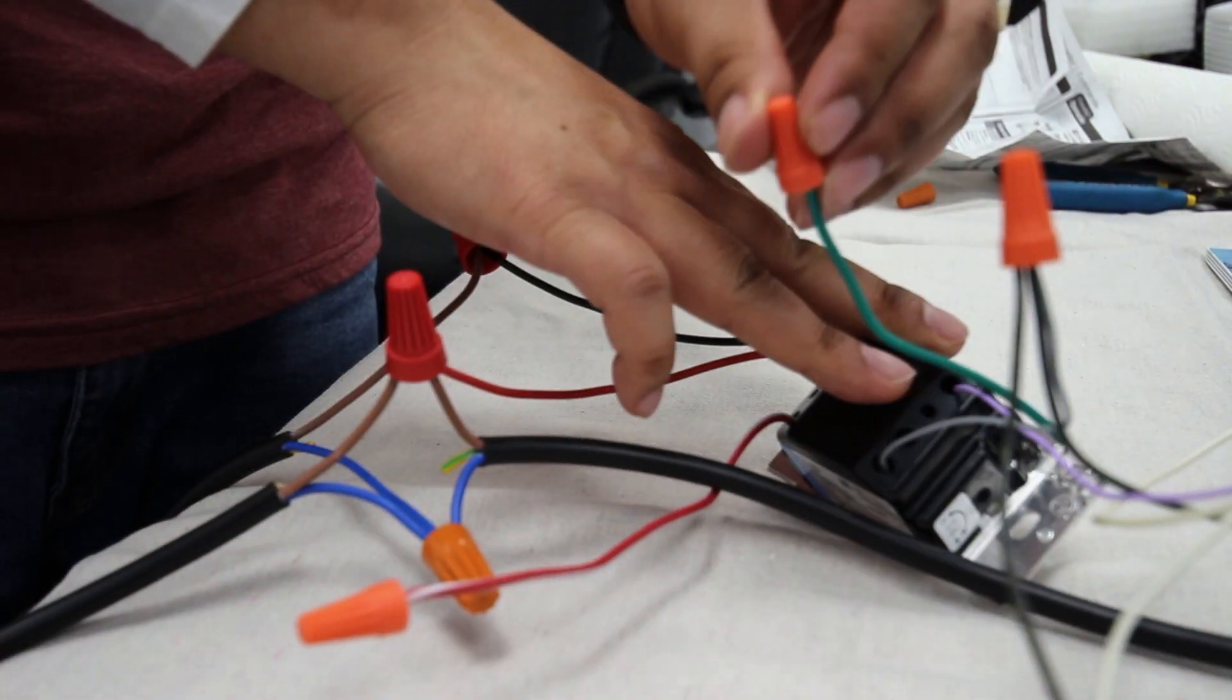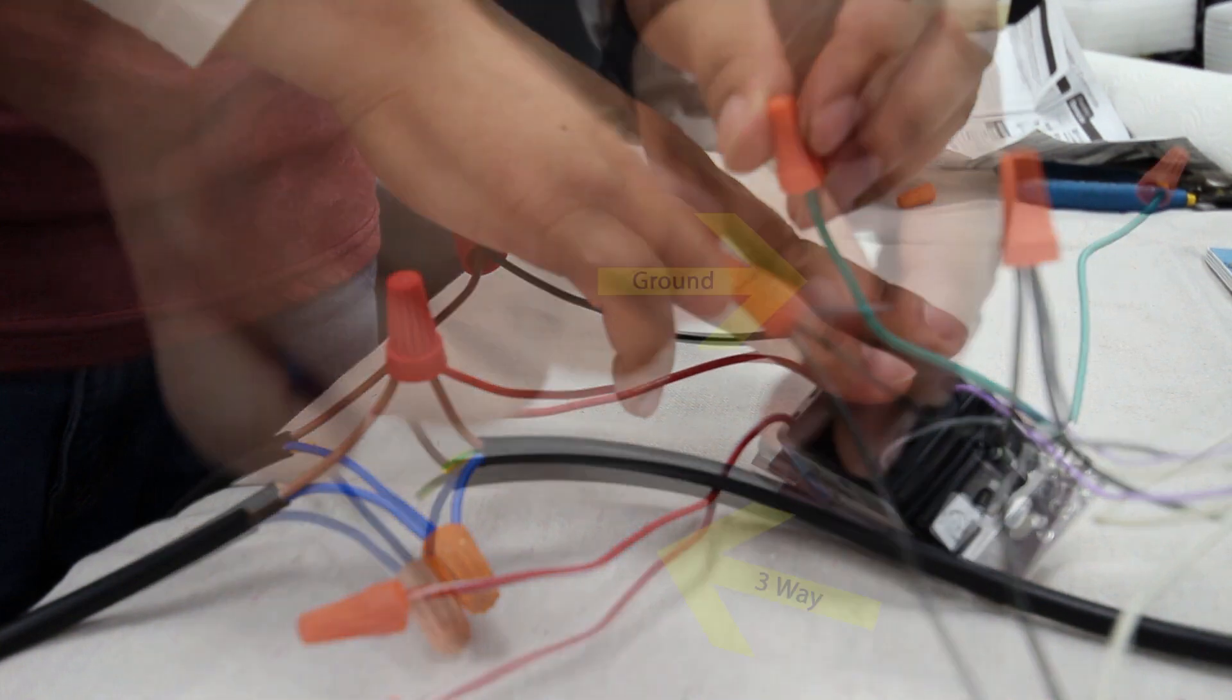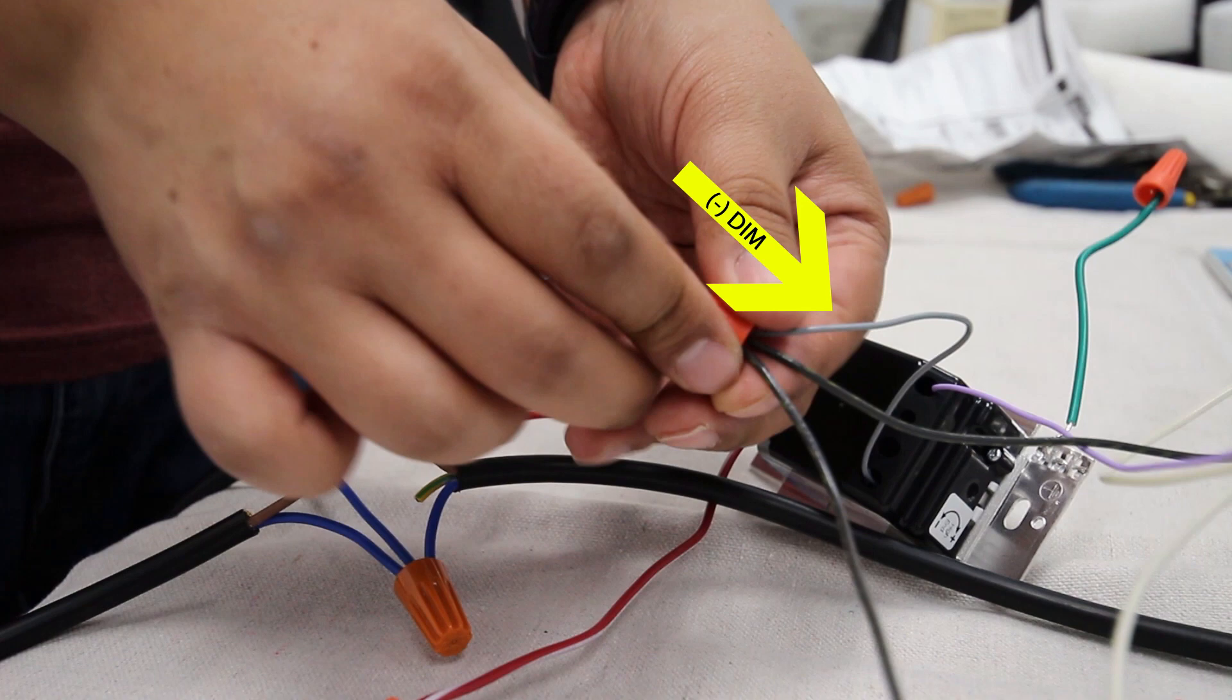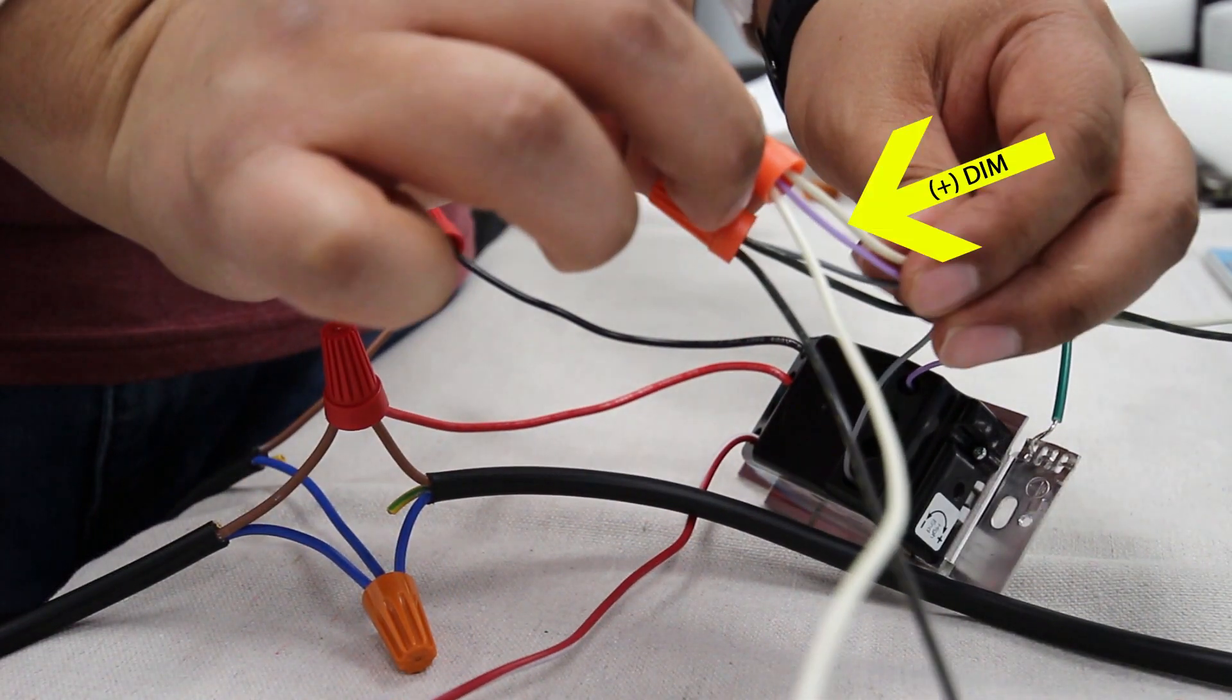We're going to cap off the red-white wire because it's for a three-way switch. We've also capped off the ground wire, but you'll need to remember to ground it. The gray wire is the negative which will go to the negative dim input, and finally the violet wire will go to the positive dim input.